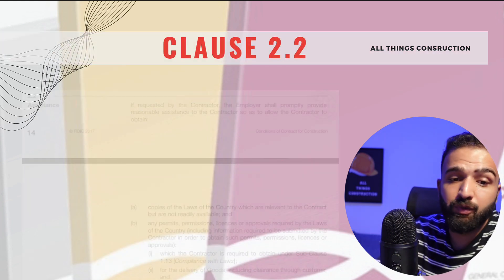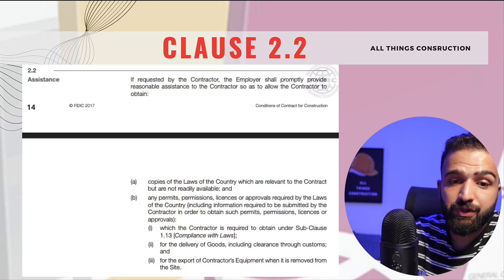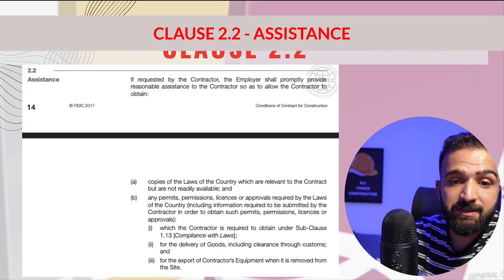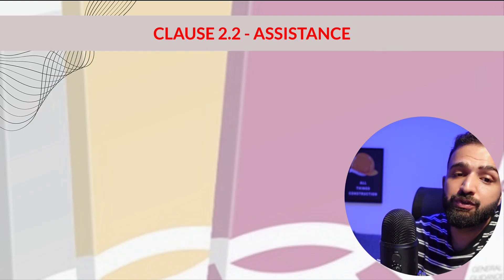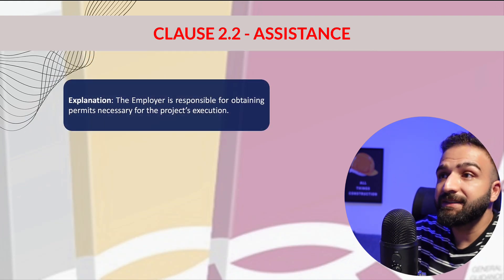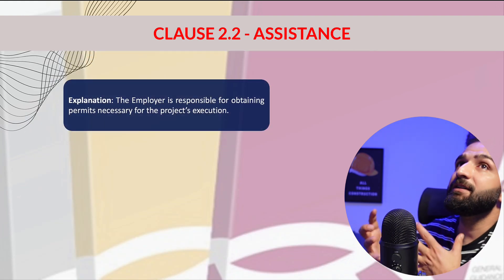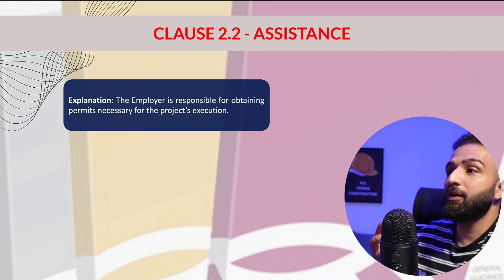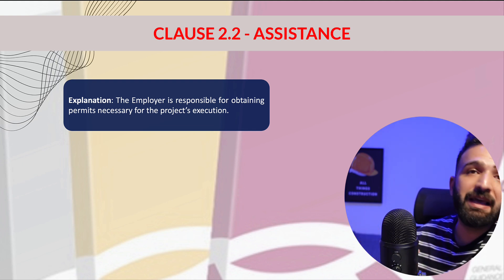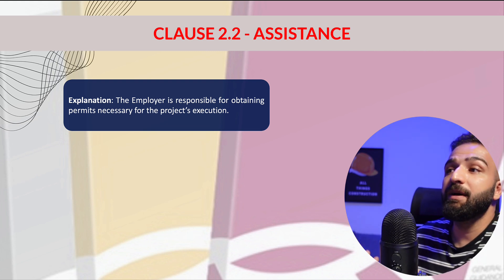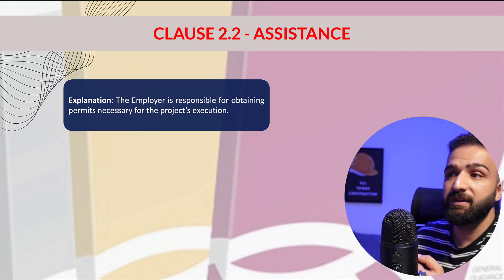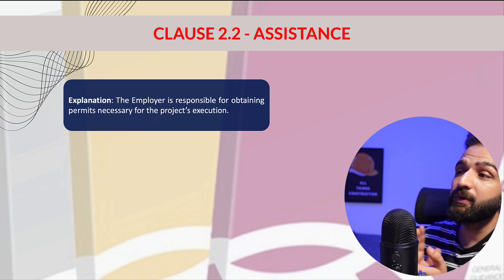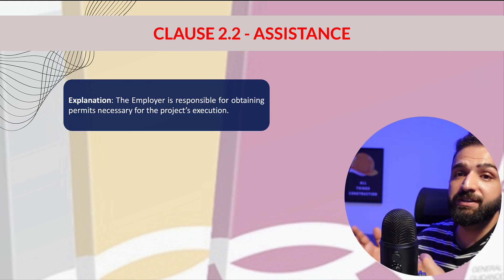Let's jump to Clause 2.2. Feel free to pause or download the PPT from the link in the comments. Clause 2.2 effectively requires the employer to assist the contractor in obtaining the necessary permits, licenses, and approvals that will probably be required by local laws for execution, completion, and any other works.